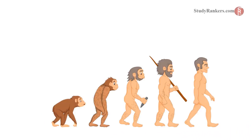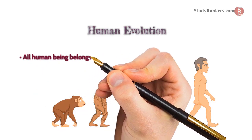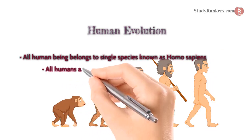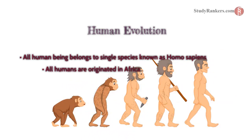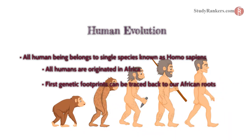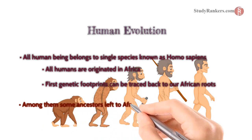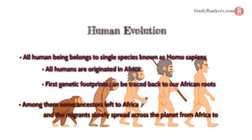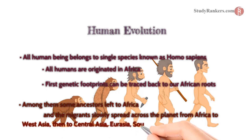Lastly, we will talk about human evolution. All human beings belong to a single species known as Homo sapiens. All humans originated in Africa; the first genetic footprints can be tracked back to our African roots. Some ancestors left Africa and the migrants slowly spread across the planet — from Africa to West Asia, then to Central Asia, Eurasia, South Asia, East Asia, and so on. That's it for this chapter. Thank you.